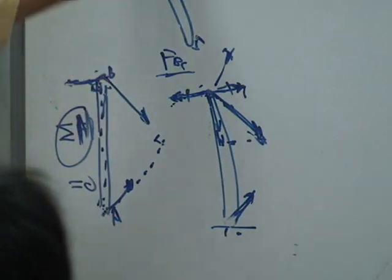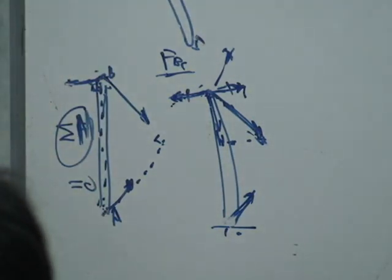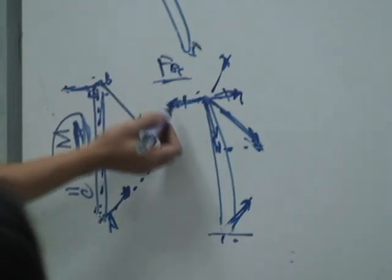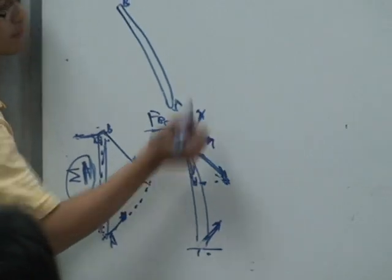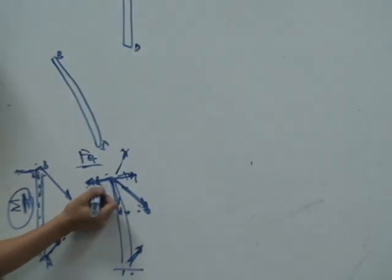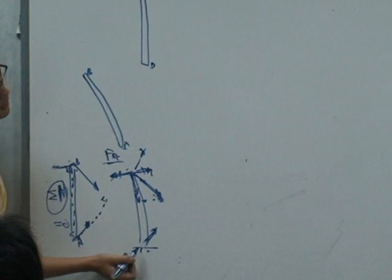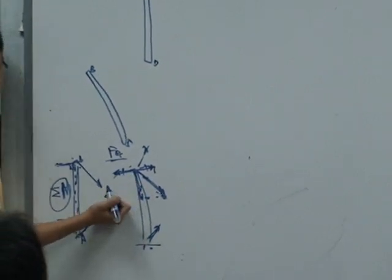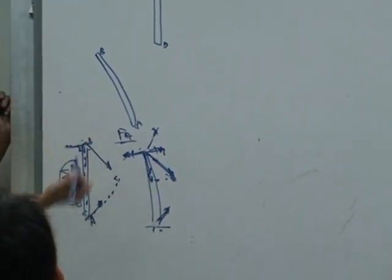To answer the question we need to look at this member BC. So, force member BC gives this member BA a force FBC.